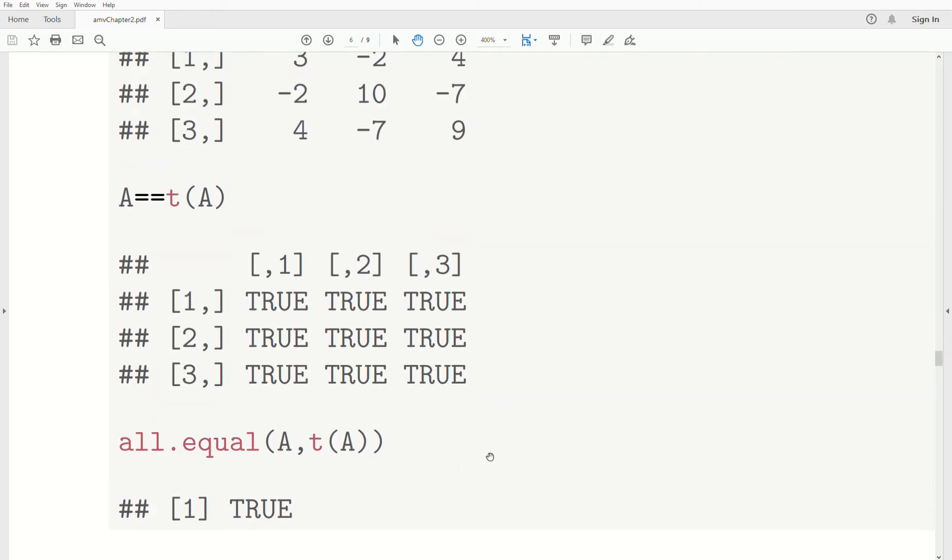Another way to do this, maybe more efficiently, is what's called the all.equal function. So we put A as the first component, and transpose of A as the second. And then it goes and compares them component by component. And if they're all true, it brings back a true. If not, it says false, and then tries to help explain where that difference is.